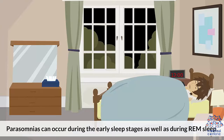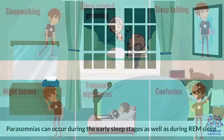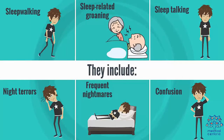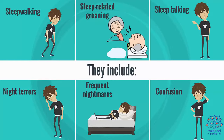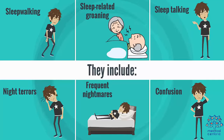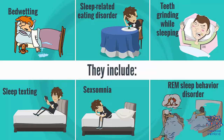Types: Parasomnias can occur during early sleep stages as well as during REM sleep. They include: 1. Sleepwalking, 2. Sleep-related groaning, 3. Sleep-talking, 4. Night terrors, 5. Frequent nightmares, 6. Confusion, 7. Bedwetting.